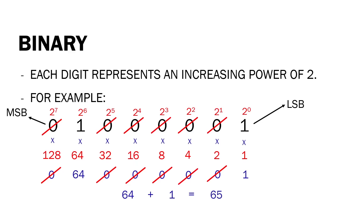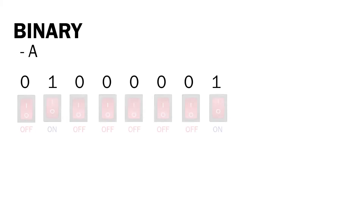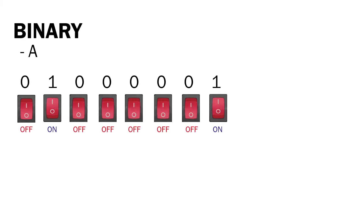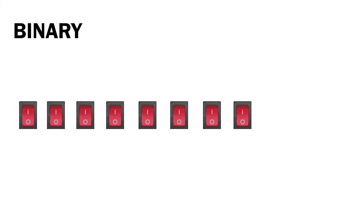We add 64 and 1 to get the sum, which is 65. And 65 in the ASCII table — or American Standard Code for Information Interchange — is equivalent to the letter A. Yes, the binary equivalent of letter A is 0 1 0 0 0 0 0 1. Every time you press the letter A on your keyboard, two of the eight switches will turn on — this one and this one.